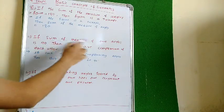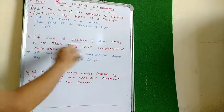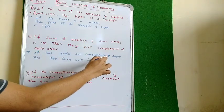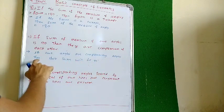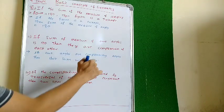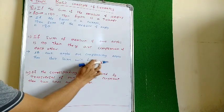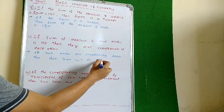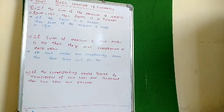See — if the sum is 90 degrees, they are complementary. And the converse: if two angles are complementary angles, then their sum will be 90 degrees. Now the third one.